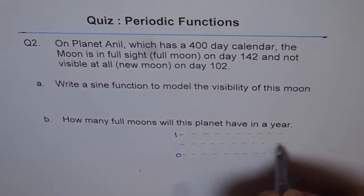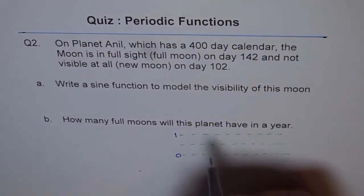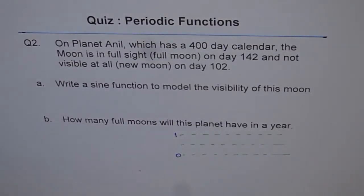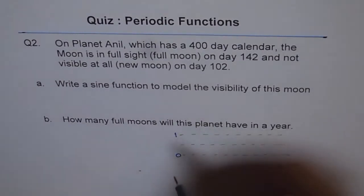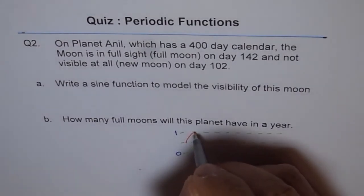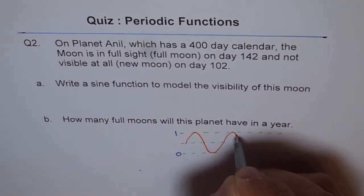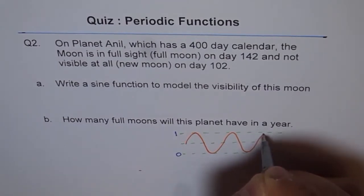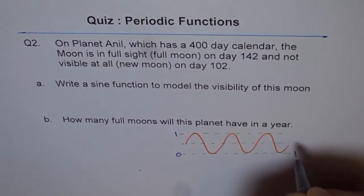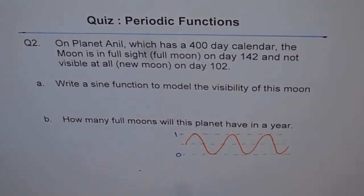So that denotes full moon, a value of 1 and this 0 not visible at all. So that is how we are trying to sketch our function. So our amplitude will be half of this. We will draw our sine wave in between. We can draw some sine waves here.